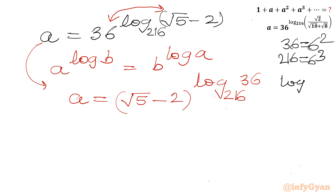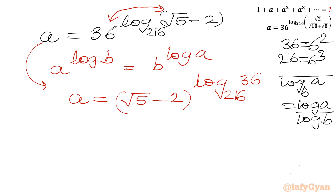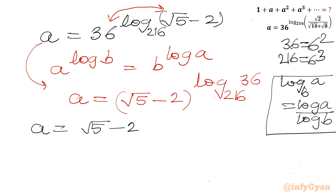Using the change of base property: log a with base b = log a / log b. Applying this, a = (√5 − 2) raised to the power log 36 / log 216.